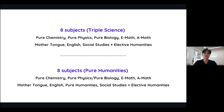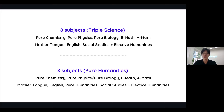Another eight-subject combination is what we call your pure humanities combination. For this one, you only take two sciences, meaning you will take pure chemistry and either pure physics or pure biology. You will still take your E-math, A-math, mother tongue, and English, but here you'll be taking a pure humanities. On top of that, you'll also be taking social studies and your elective humanities.